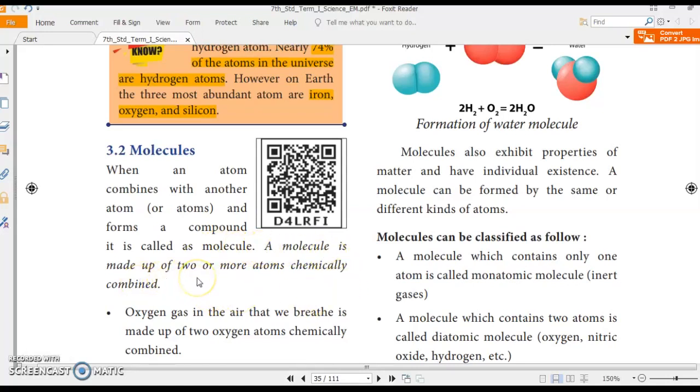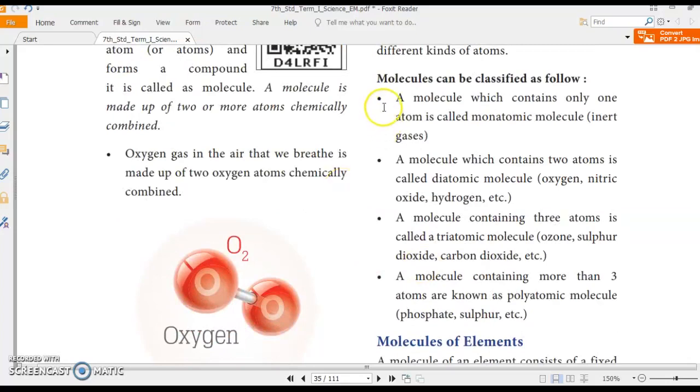Based on the number of atoms present in a molecule, we can classify molecules as monoatomic molecules, diatomic molecules, triatomic molecules, and polyatomic molecules. A molecule which contains only one atom is called monoatomic molecules. For example, inert gases. Do you know what are the inert gases? Let me tell you: helium, neon, argon, krypton, xenon, and radon. Okay. These are the inert gases.